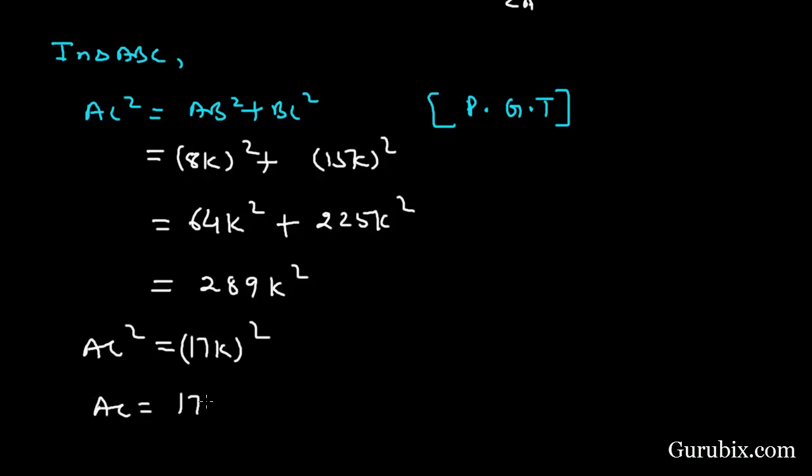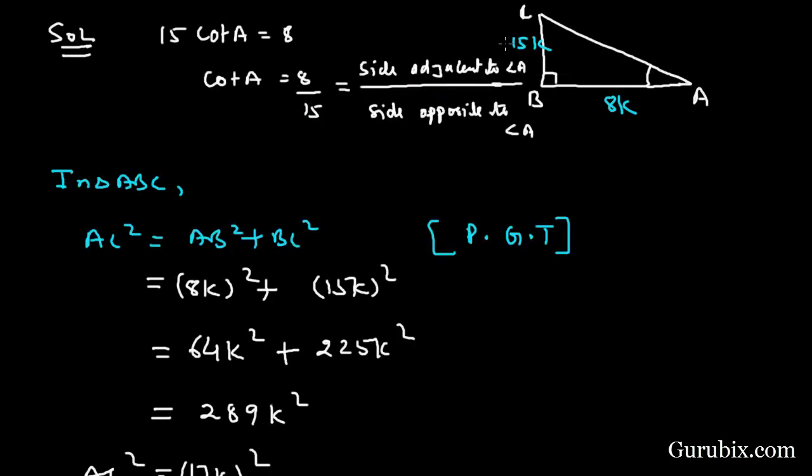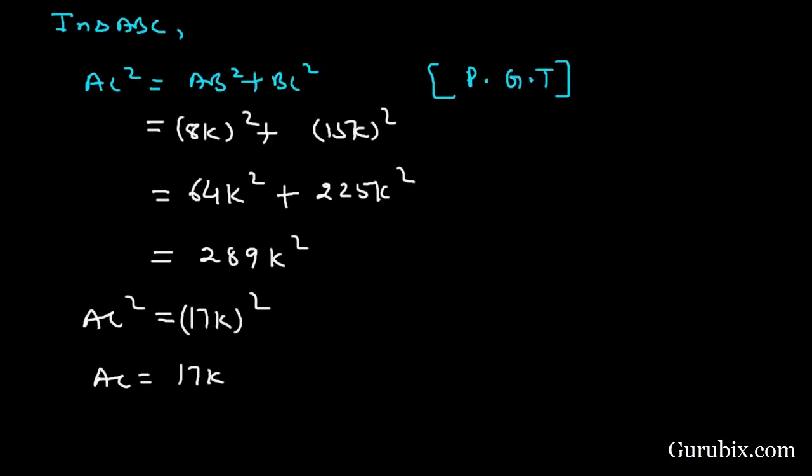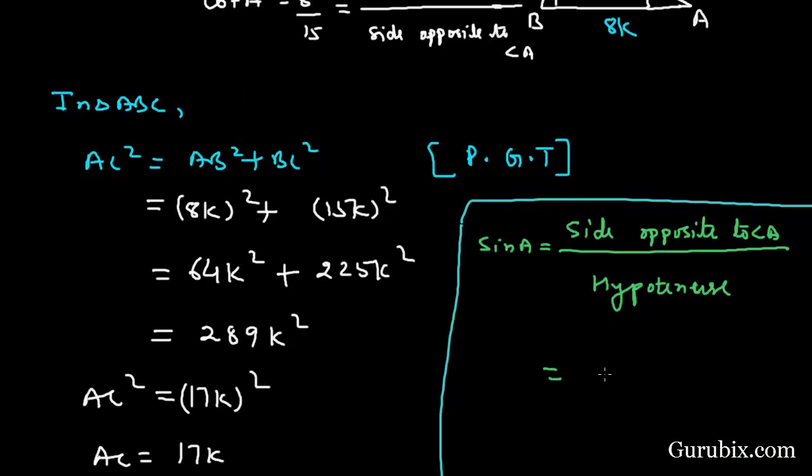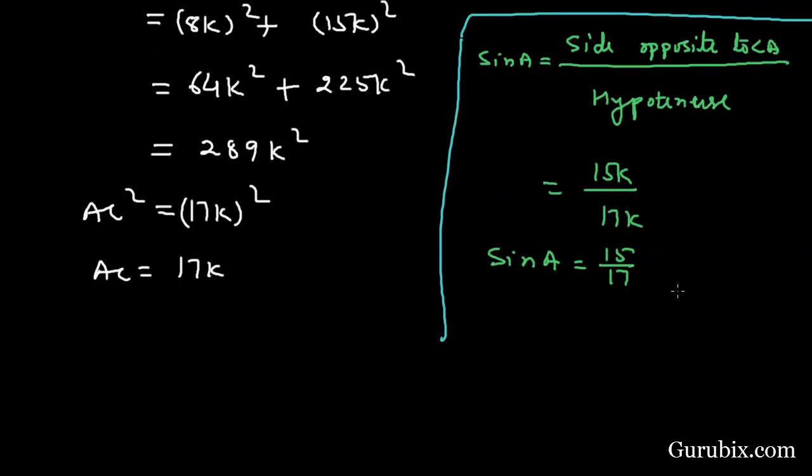And this is equals to 17k square, therefore AC is equal to 17k. Now we shall find sine A. Sine A will be equals to side opposite to angle A over hypotenuse. Side opposite to angle A is 15k, hypotenuse is 17k, so sine A is equal to 15 over 17.